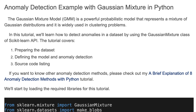The Gaussian Mixture model is a powerful probabilistic model that represents a mixture of Gaussian distributions, and it's widely used in clustering problems. In this tutorial we'll learn how to detect anomalies in a dataset by using the Gaussian Mixture class of the Scikit-learn API.